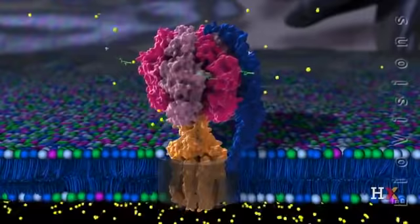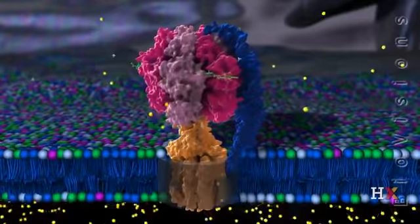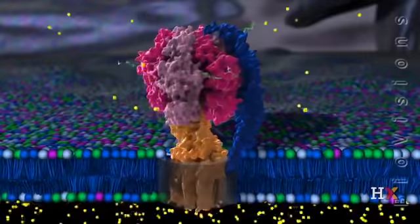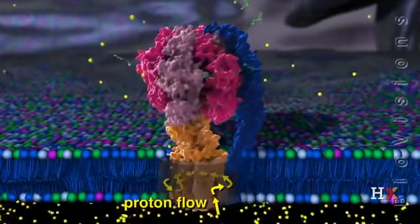Just as man-made power plants produce electrical energy by using the flow of wind, water, or steam to rotate a turbine, the synthase makes ATP by using proton flow from one side of the inner membrane to the other to rotate protein subunits.